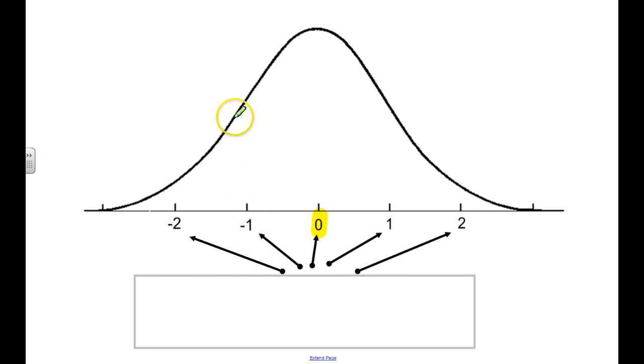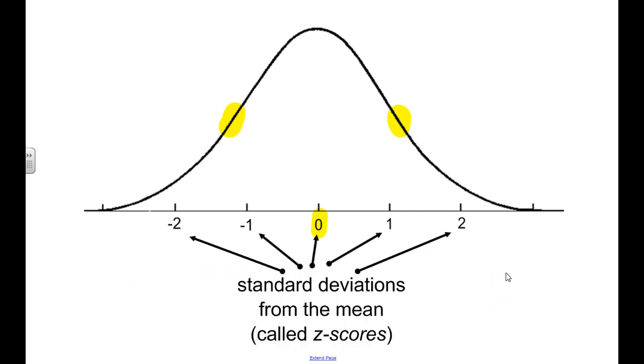And then we have negative 1 kind of around this inflection point here. And then negative 2 is where we start to wind down. And negative 3 is where it almost seems to collapse down to 0 on both sides. Now what these numbers mean is how many standard deviations you are, or an individual is, from the average, from the mean.